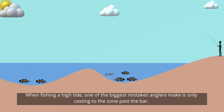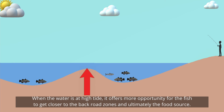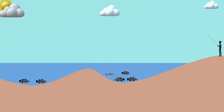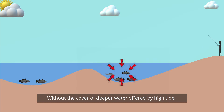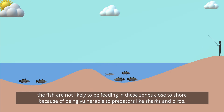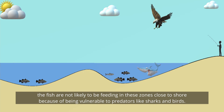When fishing a high tide, one of the biggest mistakes anglers make is only casting to the zone past the bar. When the water is at high tide, it offers more opportunity for the fish to get closer to the back road zones and ultimately the food source. Without the cover of deeper water offered by high tide, the fish are not likely to be feeding in these zones close to shore because of being vulnerable to predators like sharks and birds.